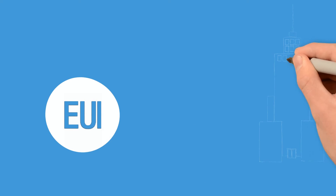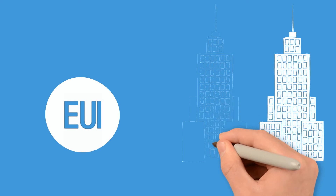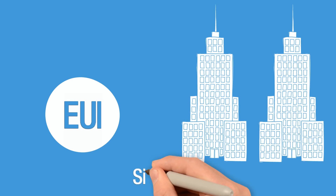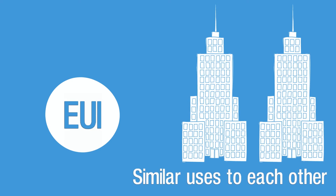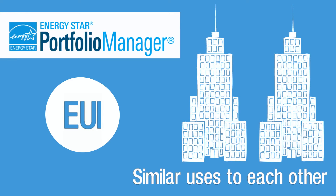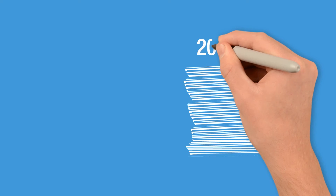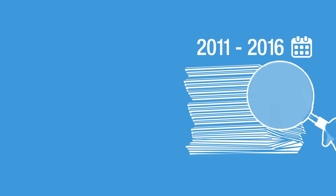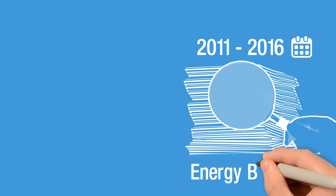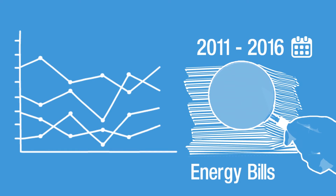How can you use EUI to help understand your building's energy performance? If you have a portfolio of buildings, you can compare the EUIs of buildings with similar uses to each other. Or, you can compare your building's EUI to the national median for your property type in Portfolio Manager. If you have historical energy use data, you can also benchmark against your building's past performance to identify spikes and dips in energy efficiency over time.